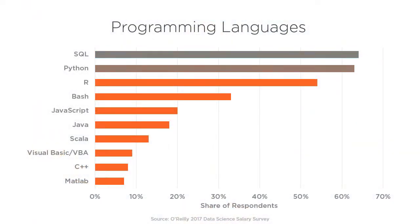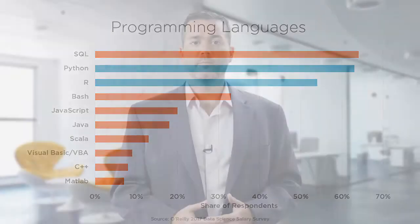Next we have Python followed by R. R and Python are the two workhorses of the data science world. Most data scientists will generally use either one or the other in addition to SQL to perform the majority of all data science tasks. However, they each have their own strengths and weaknesses, so I recommend that data scientists learn both.